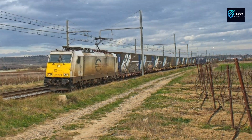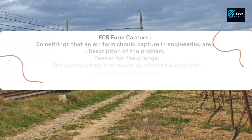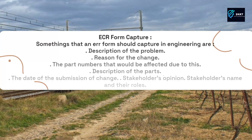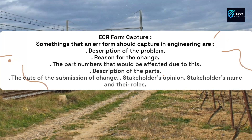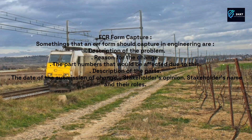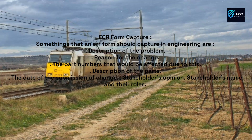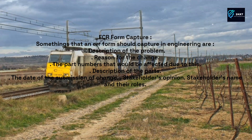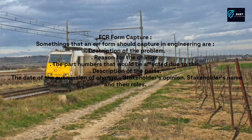Some things that an ECR form should capture in engineering are: a description of the problem, the reason for the change, the part numbers that would be affected, description of the parts, the date of submission of the change, stakeholders' opinions, and stakeholders' names and their roles.